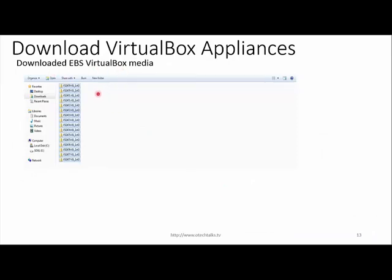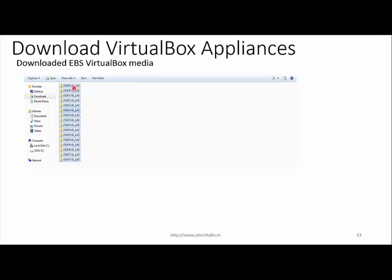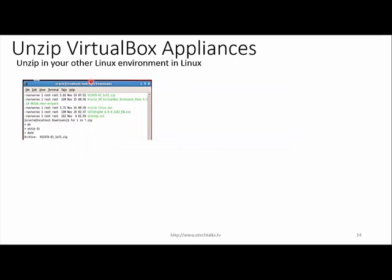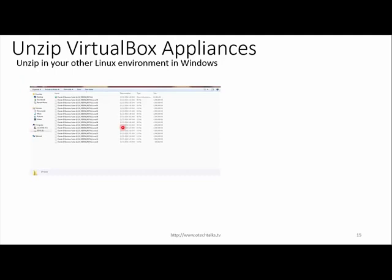Once we have downloaded the media, you can see all the EBS VirtualBox appliance files downloaded. The next step is to unzip these zip files. You can follow two processes: if you already have a Linux installation in VirtualBox, you can access this media in the Linux environment and use the unzip command. If you don't have a Linux environment, you can right-click on Windows and use the unzip option.